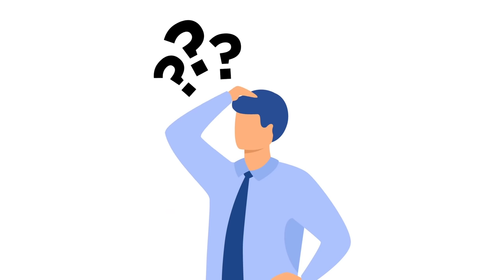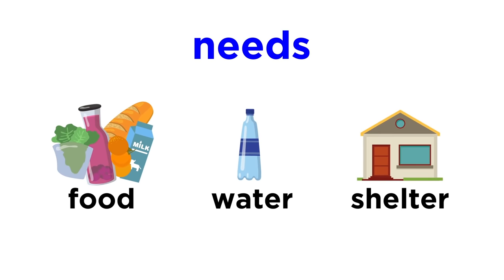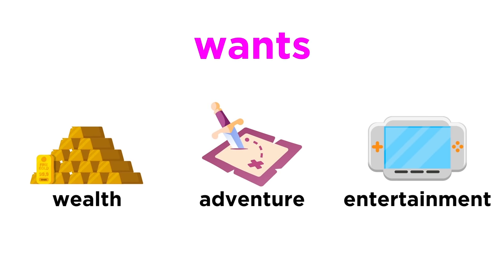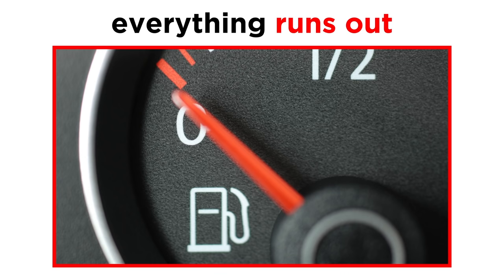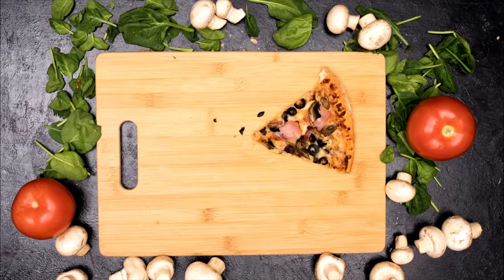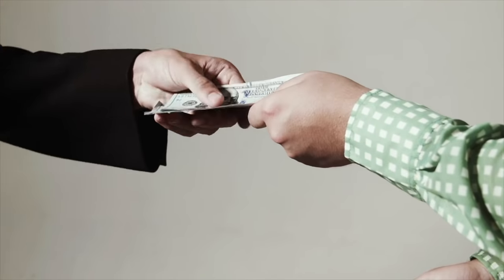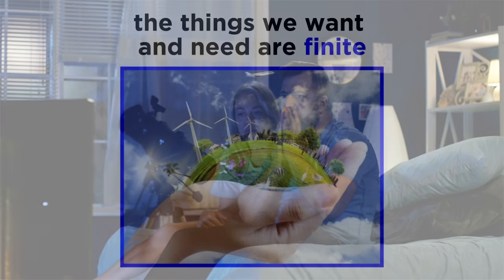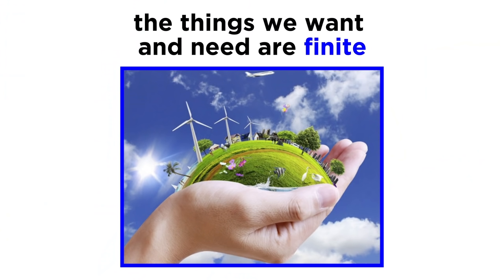As human beings, what do we want and need? We certainly all need food, water, and shelter. And our wants may range from wealth to adventure to entertainment. These wants and needs are without bounds. But even though we have endless wants and needs, everything runs out. Food gets eaten, money gets spent, and the Netflix show you're currently binging has a final season. The things that fulfill our wants and needs are finite in nature. This idea is called scarcity, and it drives everything in economics.